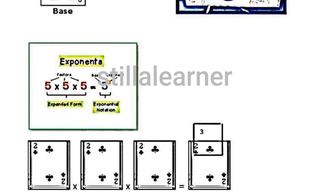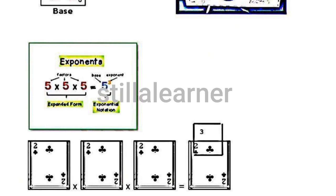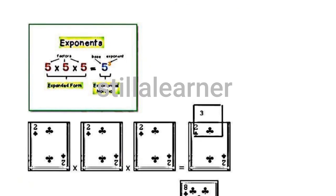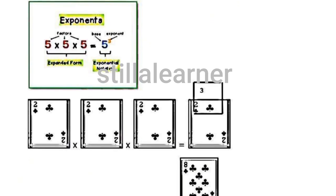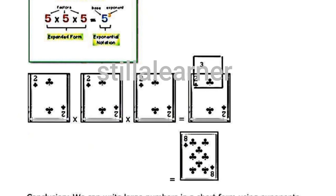So just see, 5 cube can be written as 5 multiplied by 5 multiplied by 5. And just see the last part here, 2 multiplied by 2 multiplied by 2 can be written as 2 cube, which is 8.